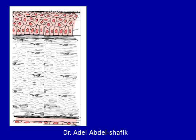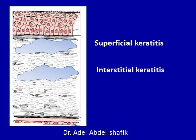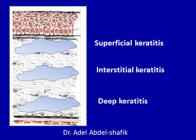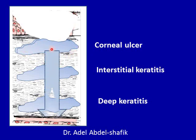Keratitis means inflammation of the cornea. It can be superficial, interstitial, or deep keratitis. Corneal ulcers means that there is a loss of the epithelium together with inflammation of the superficial layers, which may go deep through the whole layers up to perforation of the cornea.